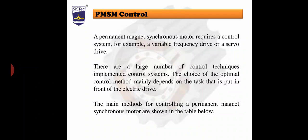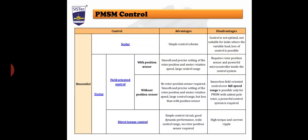The main methods for controlling a permanent magnet synchronous motor are shown in the table below. There are two types of control: sinusoidal control and trapezoidal control. Sinusoidal control is divided into two categories: scalar control and vector control. Vector control is further classified into field oriented control and direct torque control. Field oriented control is further sub-classified into with position sensor and without position sensor.